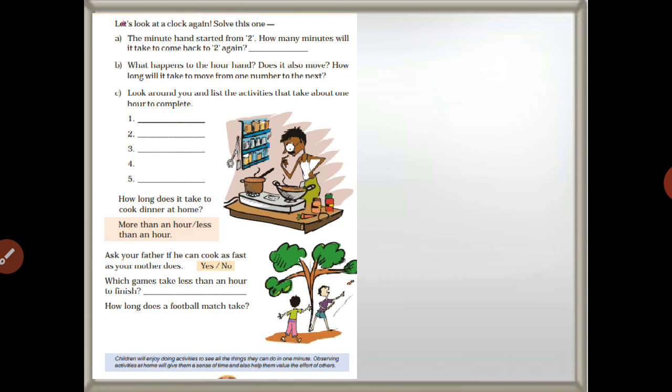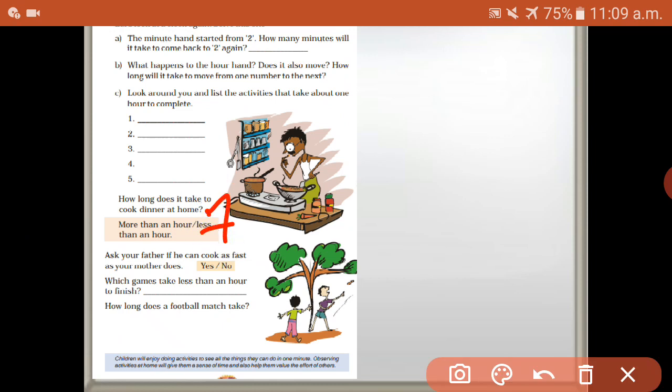Look around you and list activities that take about one hour to complete. How long does it take to cook dinner at home — less than one hour or more than one hour? Less than one hour. Ask your father if he can cook as fast as your mother — yes or no, write your answer. Which games take less than an hour to finish? Long jump, high jump — write your answer. How long does a football match take? One match takes minimum three hours.